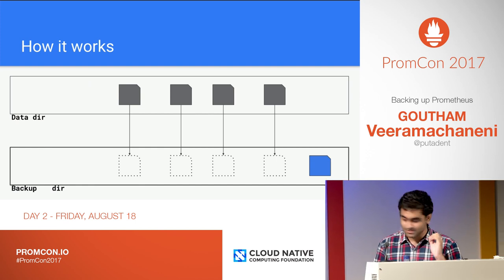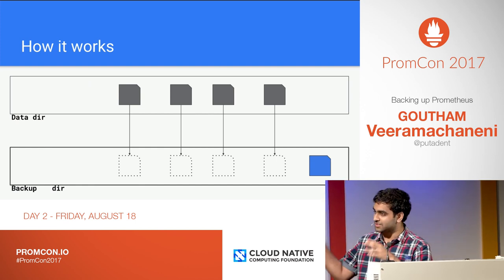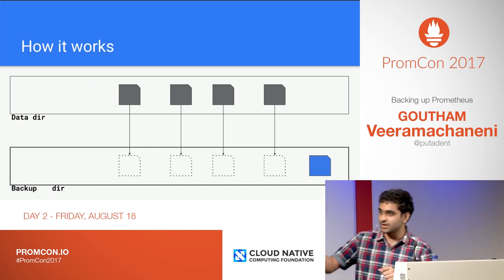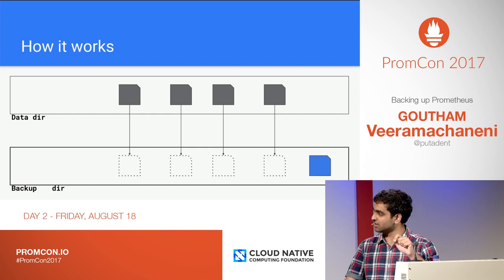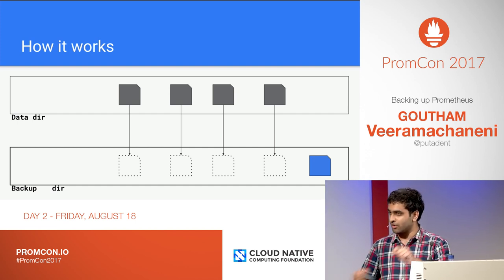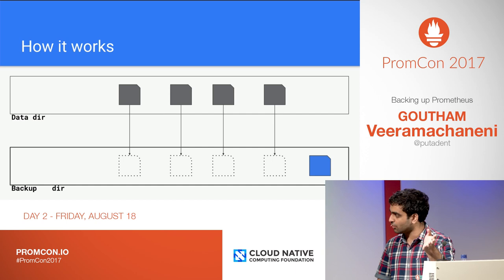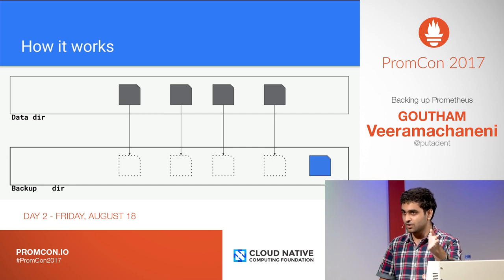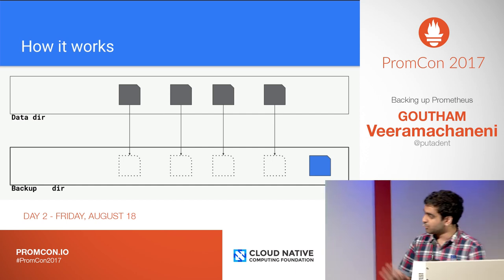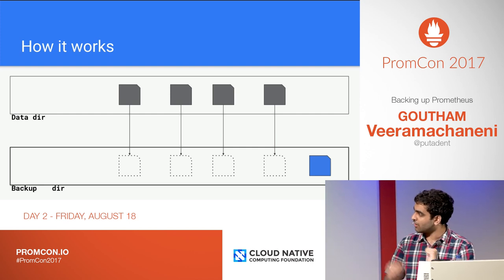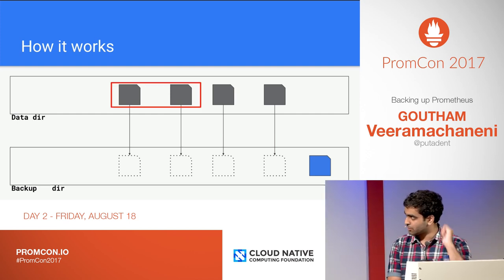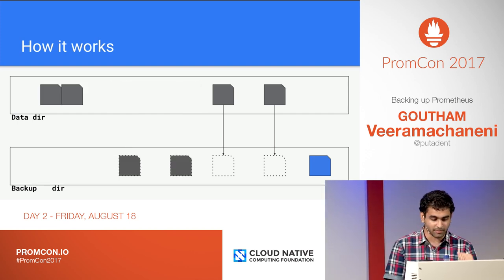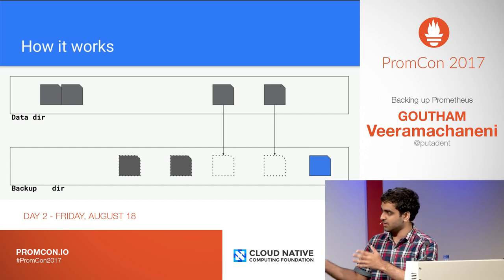How it works: you have all these persistent blocks and you hard link them. Hard links create a reference to the block in another directory, so even if somebody deletes the actual block, you still have your backup block. The blue block is the persistent in-memory block. If Prometheus goes on and compacts it, you still have your backups in the backup directory.